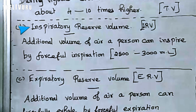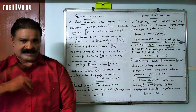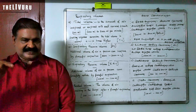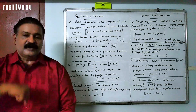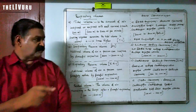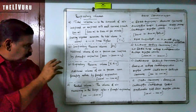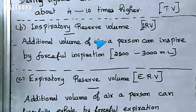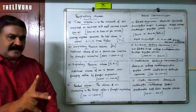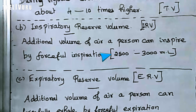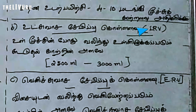Second one: Inspiratory Reserve Volume, abbreviated as IRV. This is the additional volume of air — additional to tidal volume — that a person can inspire by a forceful inspiration. That is the maximum additional air inhaled, equal to 2500 mL to 3000 mL.